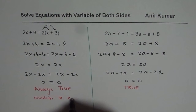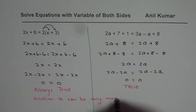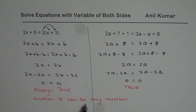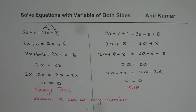We say x can be any number. If you are working with natural numbers, x could be any natural number. If you are working with real numbers, x could be any real number. So x can be any number is your solution. This equation is true for infinitely many numbers, and that is one of the possible outcomes when working with linear equations. Thank you and all the best.